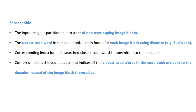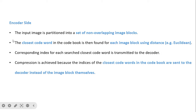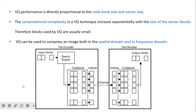On the encoder side, the input image is partitioned into a set of non-overlapping image blocks. The closest code word in the code book is found for each image block using a distance measure. The corresponding index for each closest code word is transmitted to the decoder. Compression is achieved because the indices of the closest code word are sent instead of the image blocks themselves.